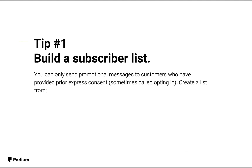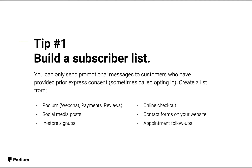Before you can send your first campaign, you'll need to create a subscriber list. Subscribers are customers who have provided prior express consent, sometimes called opting in. You can give customers a chance to opt in in several different ways, such as online through Podium using web chat, payments, or reviews, or in person at your business and during checkout. Don't be afraid to try multiple options to figure out what works best for your business.